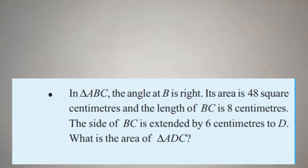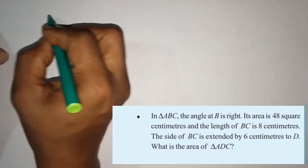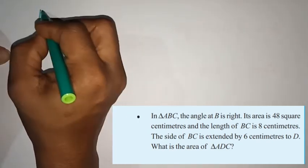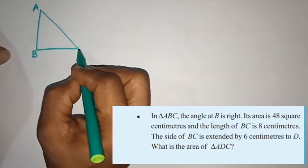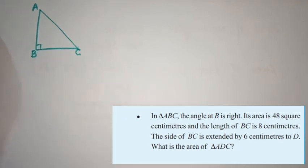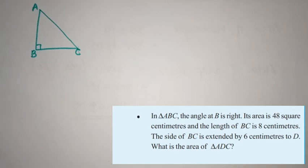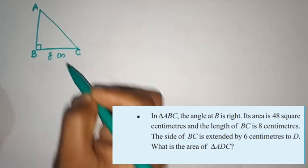Next question: we have triangle ABC. The angle at B is a right angle. Its area is 48 square centimeters and the length of BC is 8 centimeters. The side of BC is extended by 6 centimeters to D. We have a figure here showing triangle ABC — a right angle triangle with the right angle at B, 90 degrees. The area is 48 square centimeters and BC is 8 centimeters.